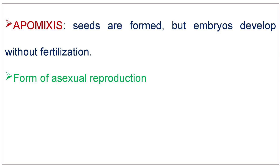What is Apomixis? It is a form of asexual reproduction in which seeds are formed but embryos develop without fertilization.